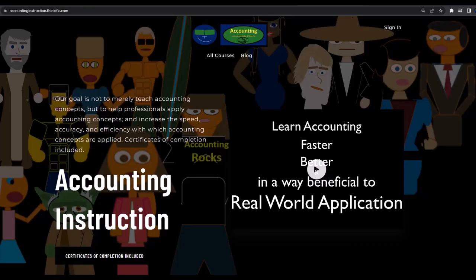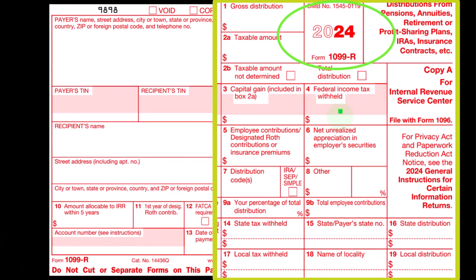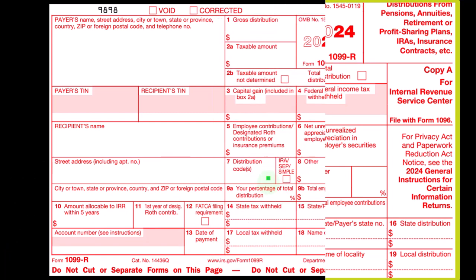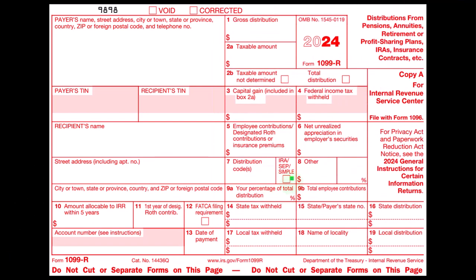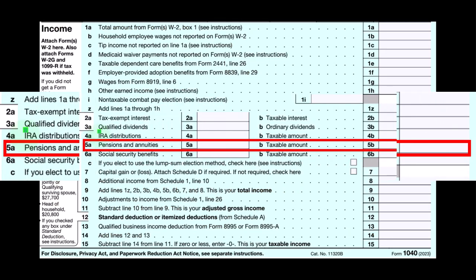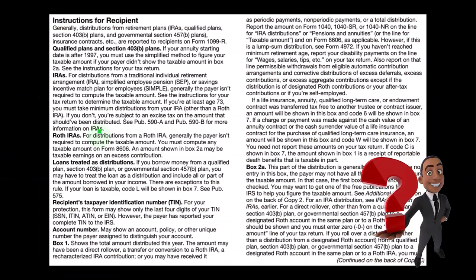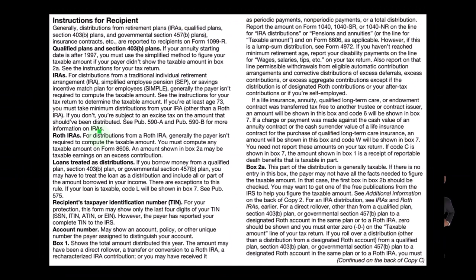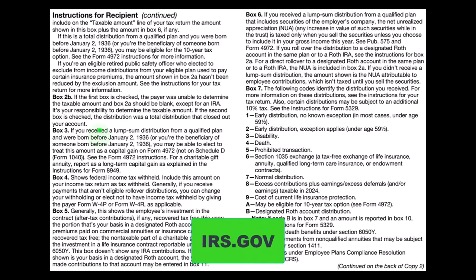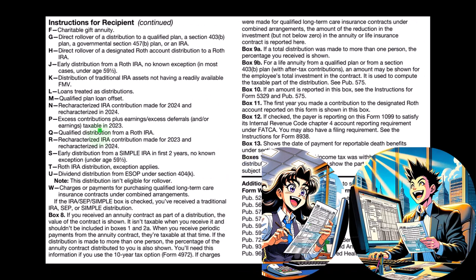If you would like a commercial-free experience, consider subscribing at accountinginstruction.com or accountinginstruction.thinkific.com. We're expecting to see more 1099-Rs and fewer W-2s typically in retirement. The distribution code is quite important and will help us determine whether it belongs on line 4 or line 5, whether it's an IRA or pension and annuity. You can look at the instructions for Form 1099-R on the IRS website to interpret the form and do further research if needed.